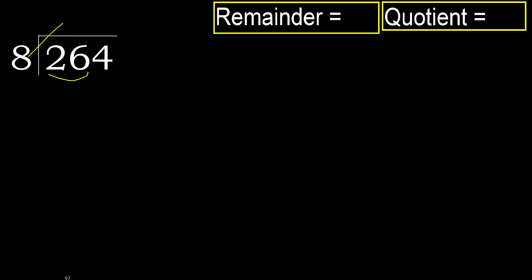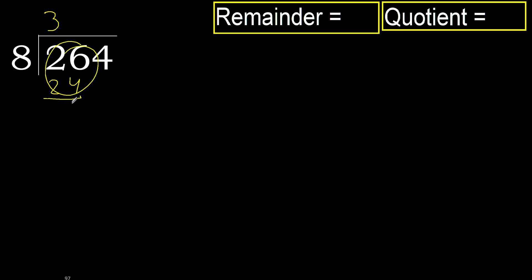Multiply 8 by which number is nearest to 26 but not greater. 8 multiply by 4 is 32, which is greater. 8 multiply by 3 is 24, which is not greater. Okay, subtract: 26 minus 24 is 2.